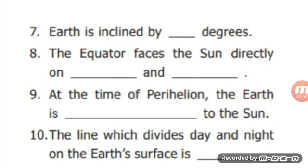Next, the equator faces the sun directly on dash and dash. Answer: The equator faces the sun directly on 21st March and 23rd September. Next, at the time of perihelion, the earth is dashed to the sun. Answer: At the time of perihelion, the earth is closest to the sun.